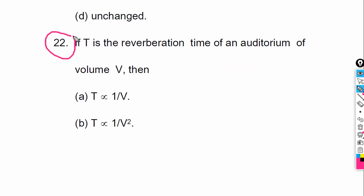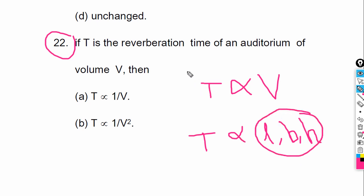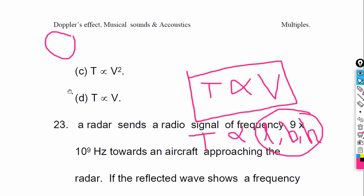Today's last question: If T is the reverberation time of an auditorium of volume V, then — T is directly proportional to V. The reverberation time is related to the length, breadth, and height of the room, meaning it is directly proportional to the volume. So the correct answer is option D — directly proportional to the volume.